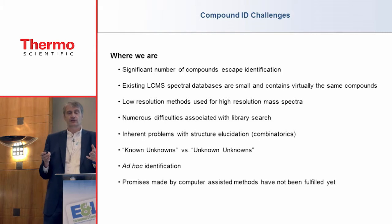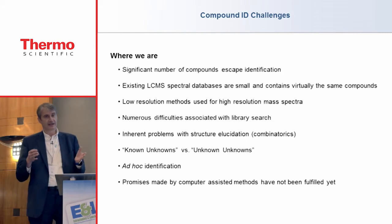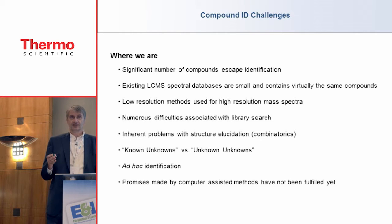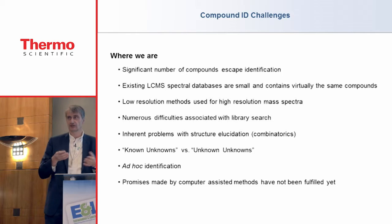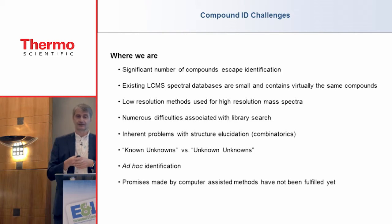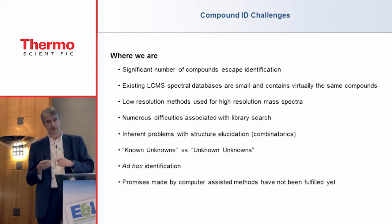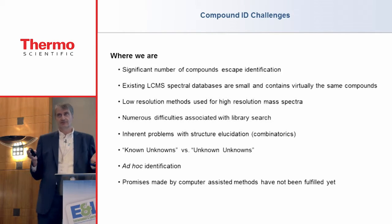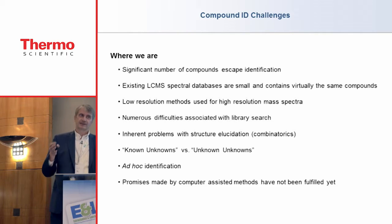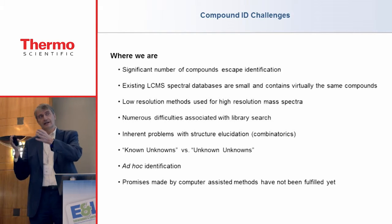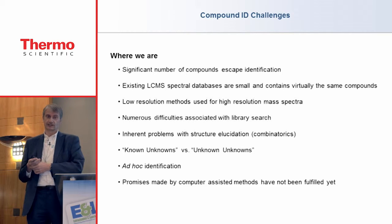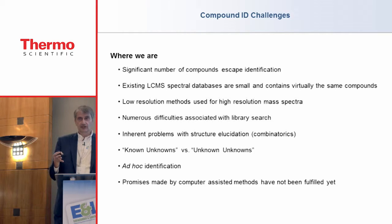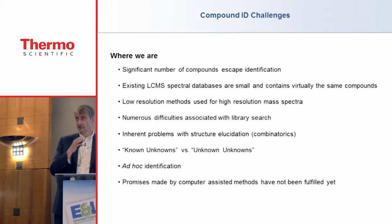For many decades, the method of choice for compound identification was library search, and it remains a very good technique. However, we have very small LC-MS databases—currently only a couple thousand compounds. If we imagine how many compounds we can search on PubChem, it's many millions, and on CAS it's even about 100 million. So it's a very small fraction of compounds that are represented in spectral databases. Today we have very cool high-resolution methods, but people and software are still using low-resolution thinking when using high-resolution spectra.